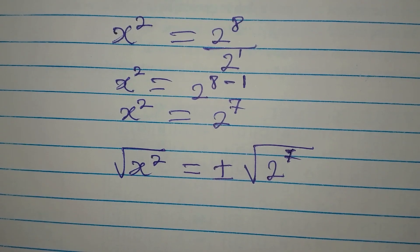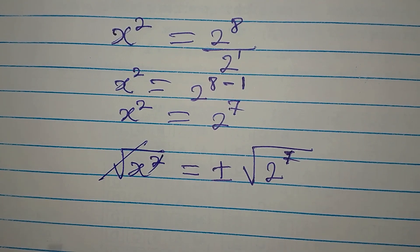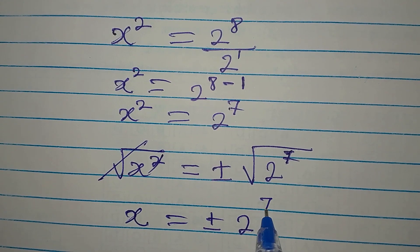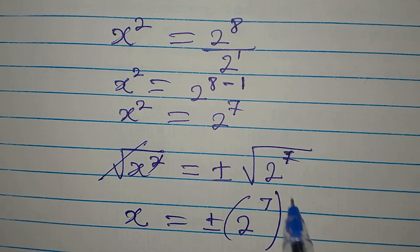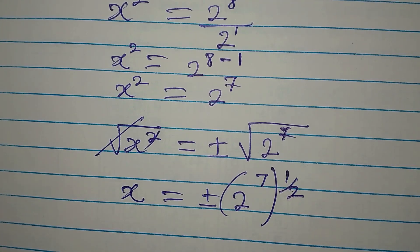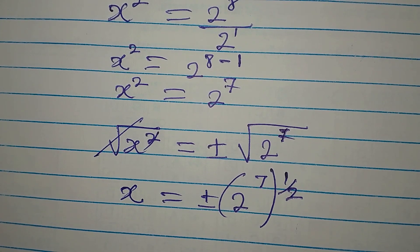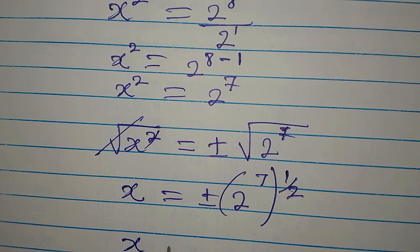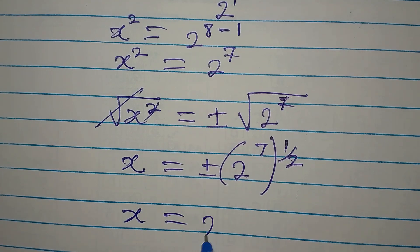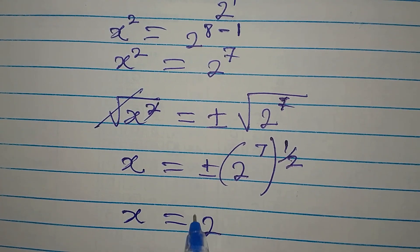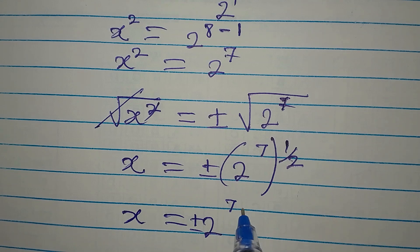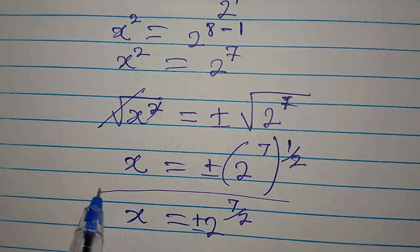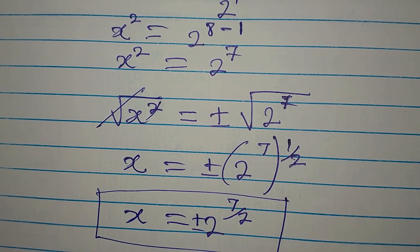This will be equal to plus or minus the square root of 2 to the power of 7. This goes with this, so x is equal to plus or minus 2 to the power of 7 to the power of 1 over 2. Remember, 2 to the power of 7 raised to the power of 1 over 2 is the same as the square root of 2 to the power of 7. So x equals plus or minus 2 to the power of 7 over 2. That's what the first method gave us — now let's try the second method.